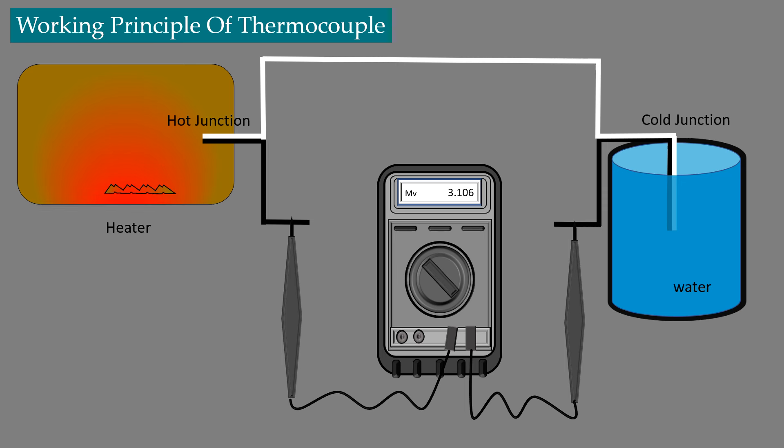Now if we increase the temperature of the hot junction using the heater, we can see that the reading shown in the multimeter also increases. This proves that the voltage between these two junctions is a function of temperature difference between them. This effect is known as the Seebeck effect.